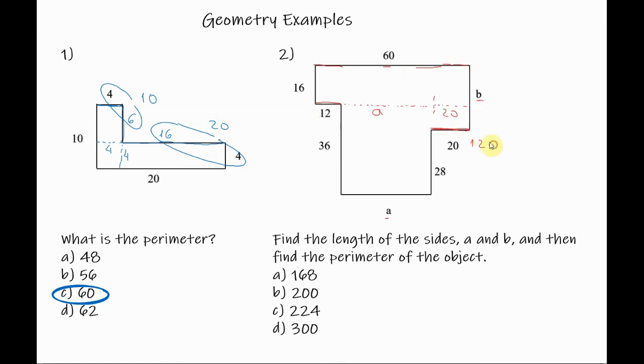So we have 12 plus A plus 20 is equal to 60. So A is equal to 60 minus 12 minus 20, and A is equal to 60 minus 20 is 40 minus 12. This is equal to 28.